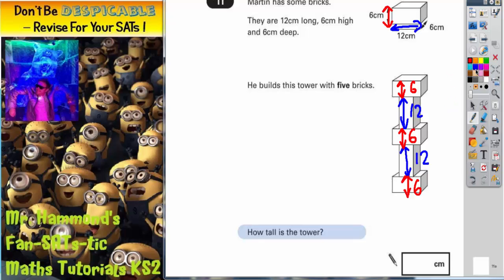So what we need to do is add these numbers together. We've got 2 lots of 12 which is 24cm, and then we've got 3 lots of 6 which is 18cm.